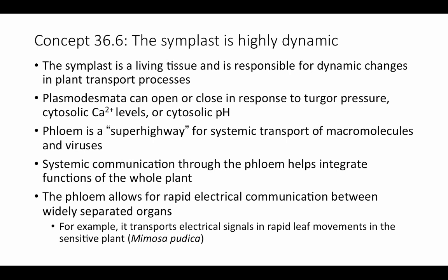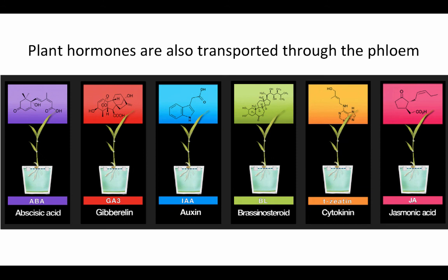This systemic communication through the phloem helps integrate functions of the whole plant, which we'll see when looking at how plants respond to their environment through hormones. The phloem also allows rapid electrical communication between widely separated organs — similar to the nervous system in animals. In plants like the sensitive plant and venus flytraps, electrical signals have been detected that mediate rapid leaf movements. Plant hormones transported through the phloem will be the subject of our next classes.